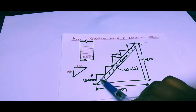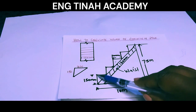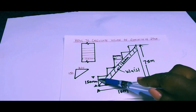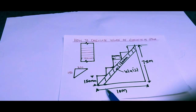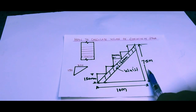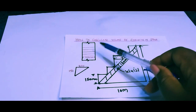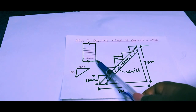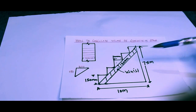This is our stair. On the stair we have two key parts: this is the riser and this is the tread or step. The riser is 150 millimeters, the tread is 200 millimeters, the horizontal length of the stair is 10 meters, the height of the stair is 7.5 meters, and the width of the stair is 1.2 meters or 1200 millimeters.